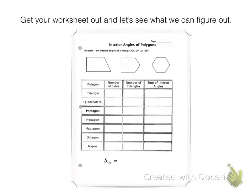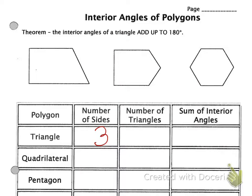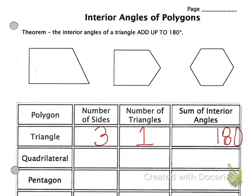All right. So here's the worksheet. Make sure you've got that out and ready. So interior angles and polygons. The number of sides in a triangle — there's three. We're going to go across here: what's the number of triangles in a triangle? One. And what is the sum of the interior angles? We just talked about that — 180 degrees. That's one times 180.